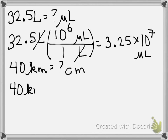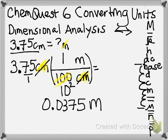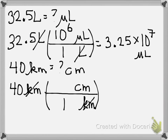I start with my 40 kilometers — that's my given. Kilometers will have to go on the bottom because it's in the numerator to start, and now it's in the denominator. I'm converting to centimeters. Kilometers are the larger unit. Here's my kilometer, here's my centimeter, so I count: 1, 2, 3, 4, 5 — 10 to the 5th. Which means we have an answer of 4 times 10 to the 6th centimeters.